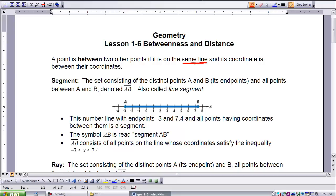The symbol that you see here is red, segment AB. And the other thing that you need to be aware of is that AB consists of all points on the line whose coordinates satisfy the inequality: negative 3 is less than or equal to X, which is less than or equal to 7.4.